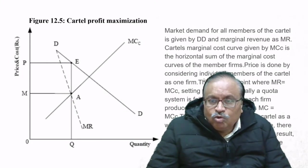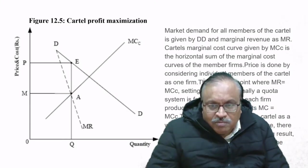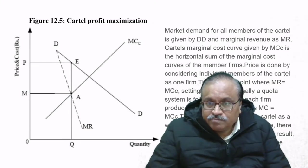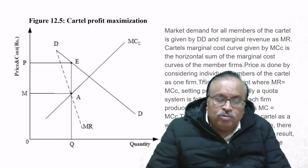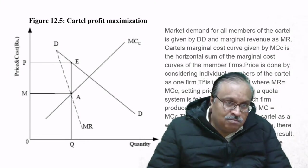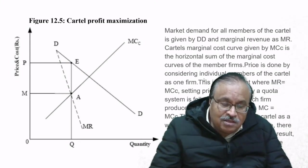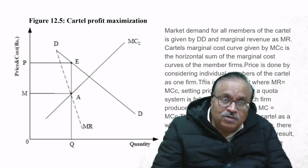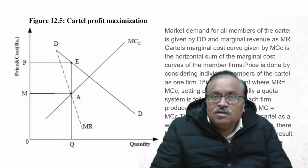Normally a quota system is followed whereby each firm produces a quantity such that its marginal cost equals MCC. There is an incentive for the cartel as a whole to restrict output. When they all work together and restrict their quota of supply, they can command the price—raising or lowering it depending on their own interest.